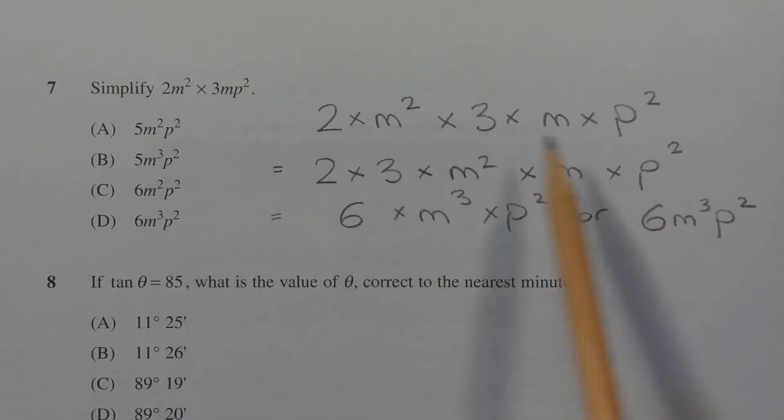So I'm going to rearrange the terms by grouping the numbers first and then the variables by letter. So this expression can be written as 2 times 3 times m squared times m times p squared.